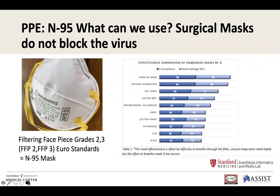There are different standards for N95 masks — the N95 is the US standard, and FFP2 and FFP3 are the European equivalents. None of the other mask types — surgical masks, silk, or scarves — will block the virus. They'll block bacteria, which are much bigger, but to block the virus you need an N95 mask. Since we may have very few N95 masks, we're going to have to find ways to reuse them.